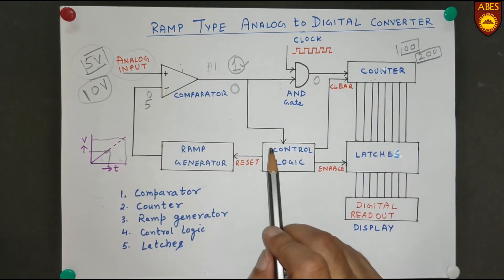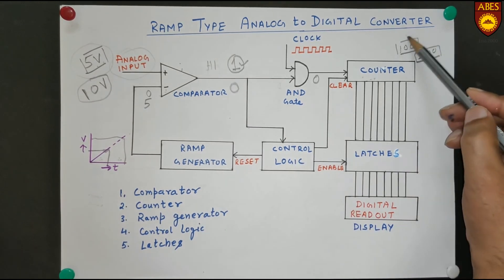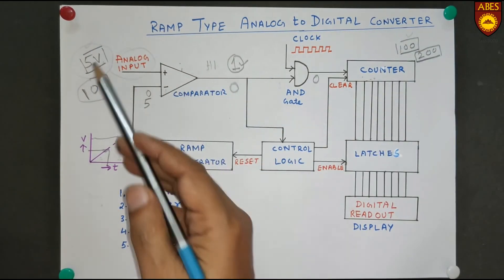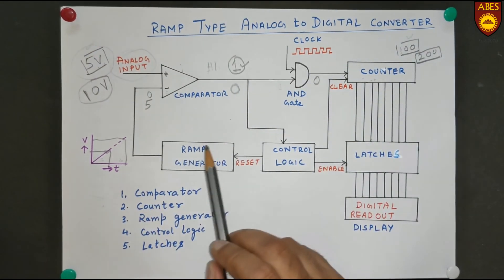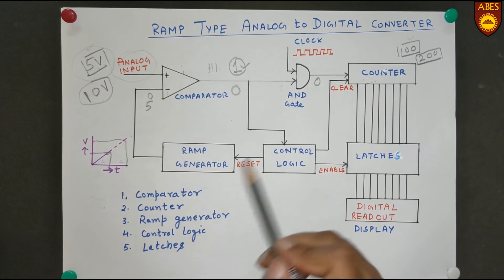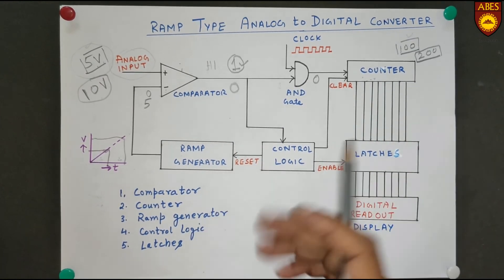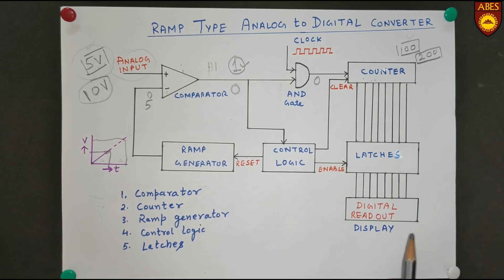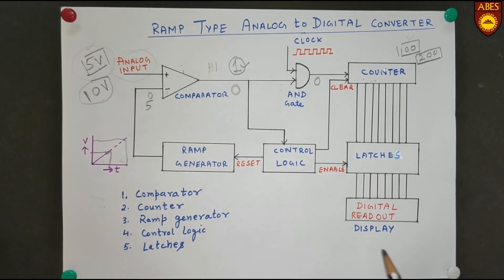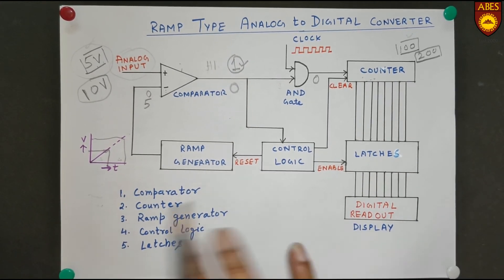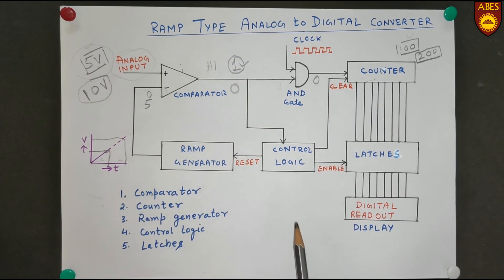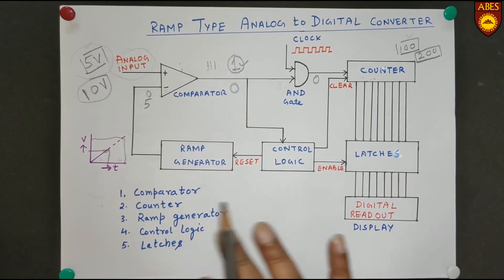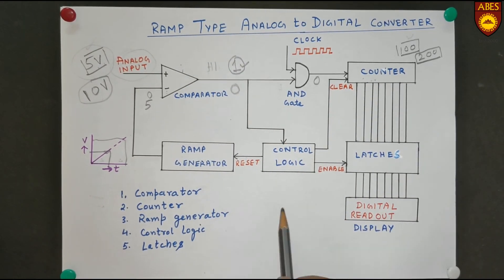The system is calibrated by giving known inputs and recording the corresponding pulse counts. Once calibrated, it gives an output you can read and interpret. In this way, the Ramp Type Analog to Digital Converter converts an analog signal into a digital signal.